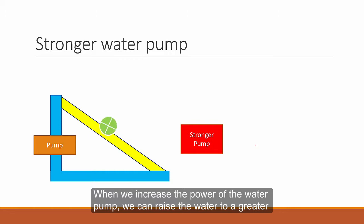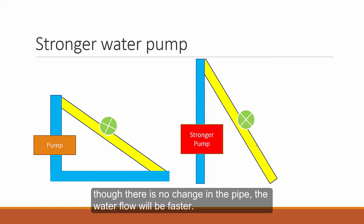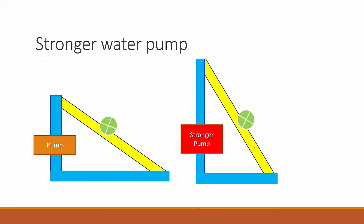When we increase the power of the water pump using a stronger pump, we can actually raise the water to a greater height difference. And thus, though there's no change in the pipe, the water flow will be faster. Likewise, the opposite can happen when the pump is weaker, the water flow will be slower. So this analogy is quite similar to higher EMF V leading to greater current I.